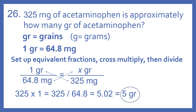So to solve this, I'm going to set up equivalent fractions, cross-multiply, then divide. There's one grain per 64.8 milligrams equals X grains per 325 milligrams. So 325 times 1 equals 325, divided by 64.8 equals 5.02. So 5 grains — 325 milligrams is 5 grains.